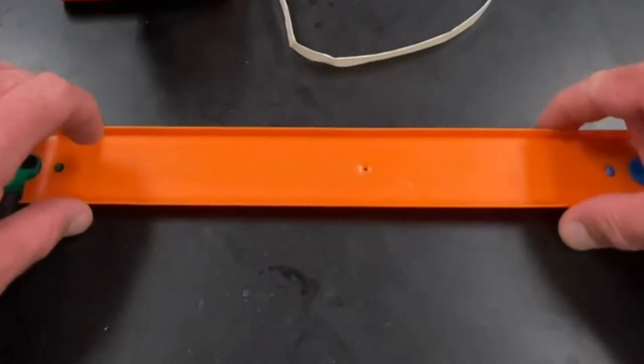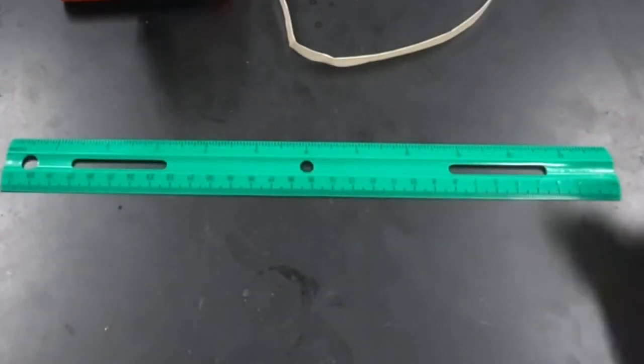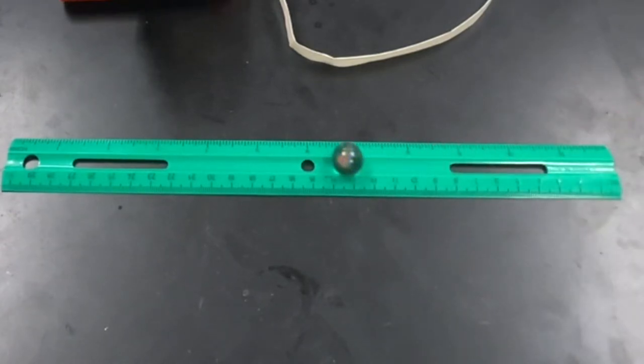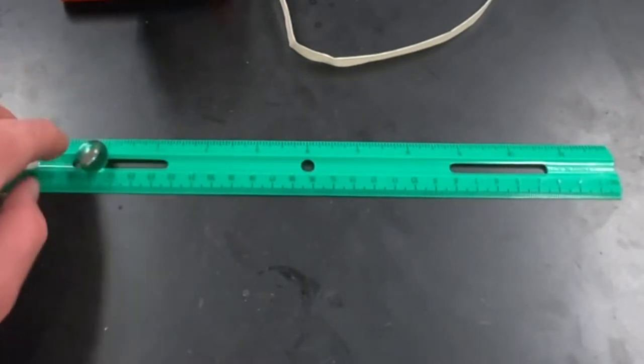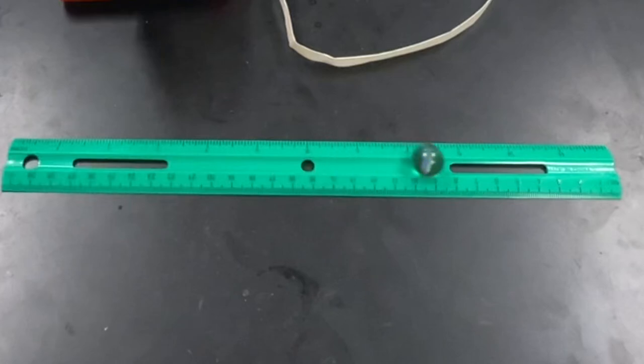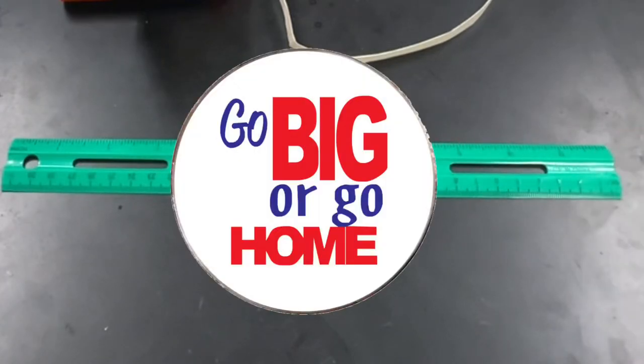We already talked about how if you don't have tracks, you can use rulers for tracks and they work great for small spheres like the marble here. But not everybody has small spheres, plus we want to go bigger anyway.